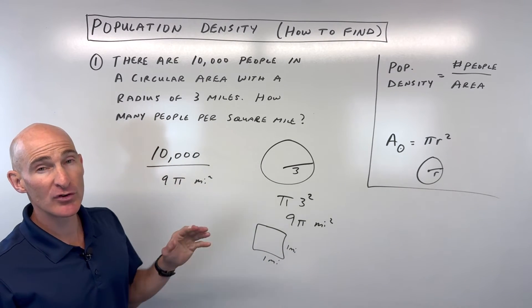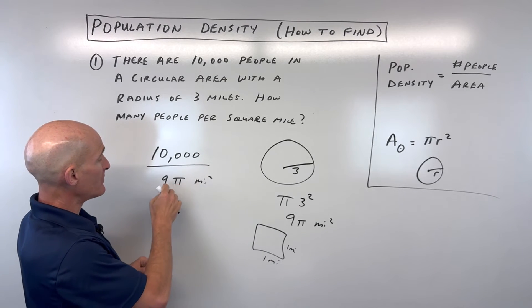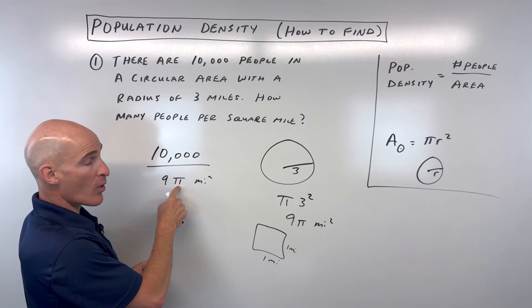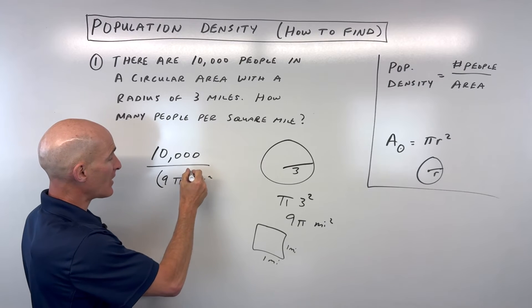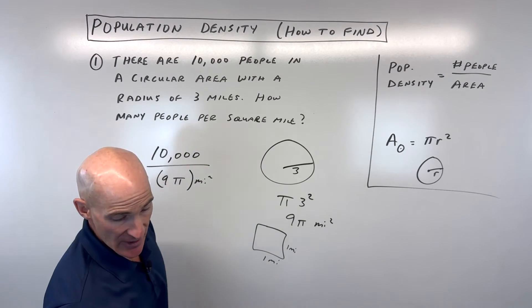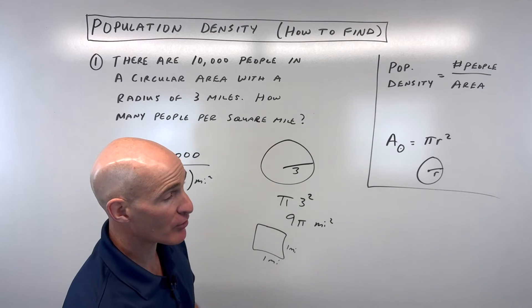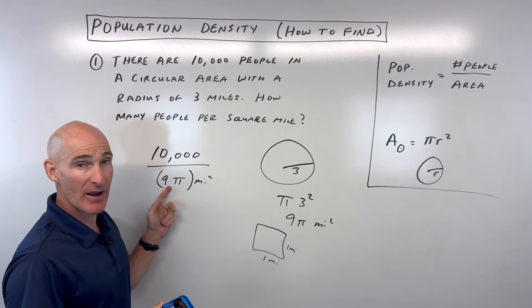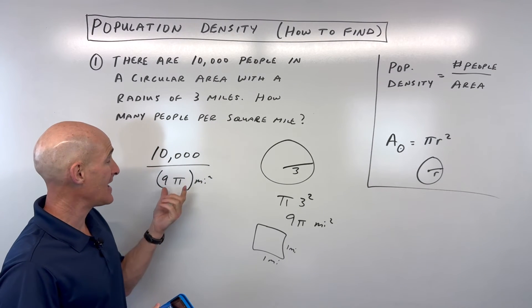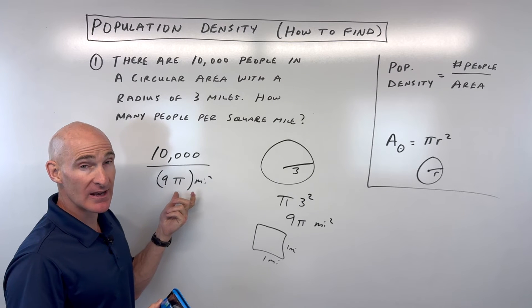One thing you want to be careful of when you divide these two numbers: because you're dividing by more than one quantity here, you're going to want to make sure you put this in parentheses, nine pi as a group. If you just do 10,000 divided by nine times pi without parentheses, your calculator is going to divide by nine, then multiply by pi instead of dividing by this whole quantity, nine pi.